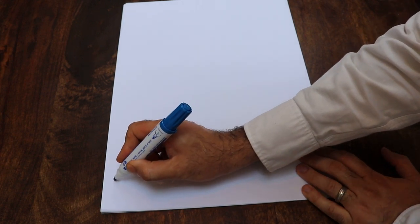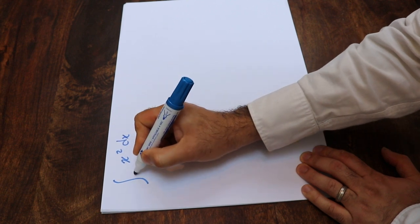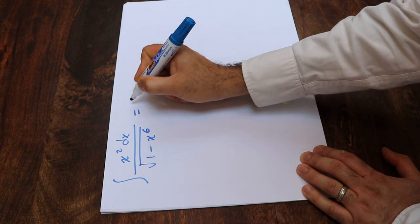Hello, today I'm going to show you how to calculate the integral of x² dx divided by the square root of 1 minus x to the power of 6.